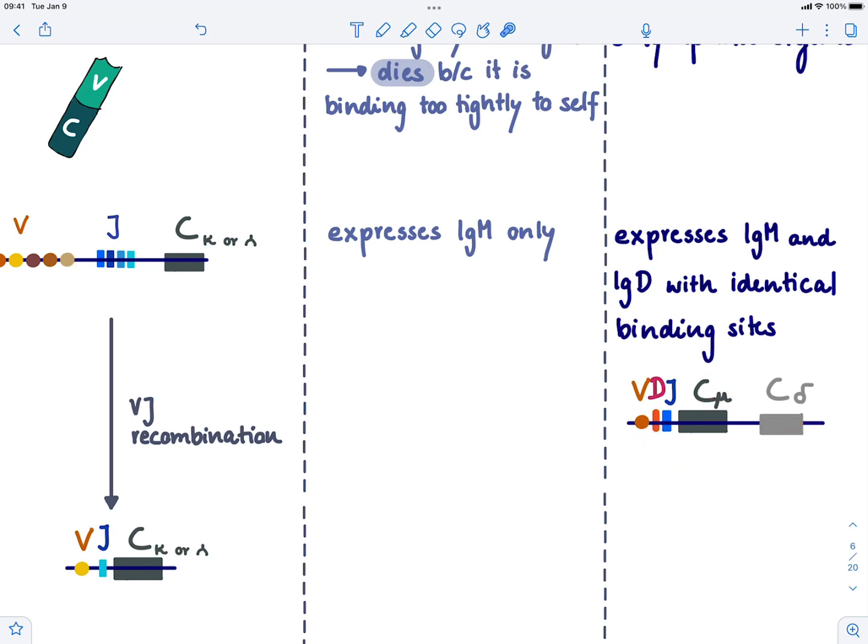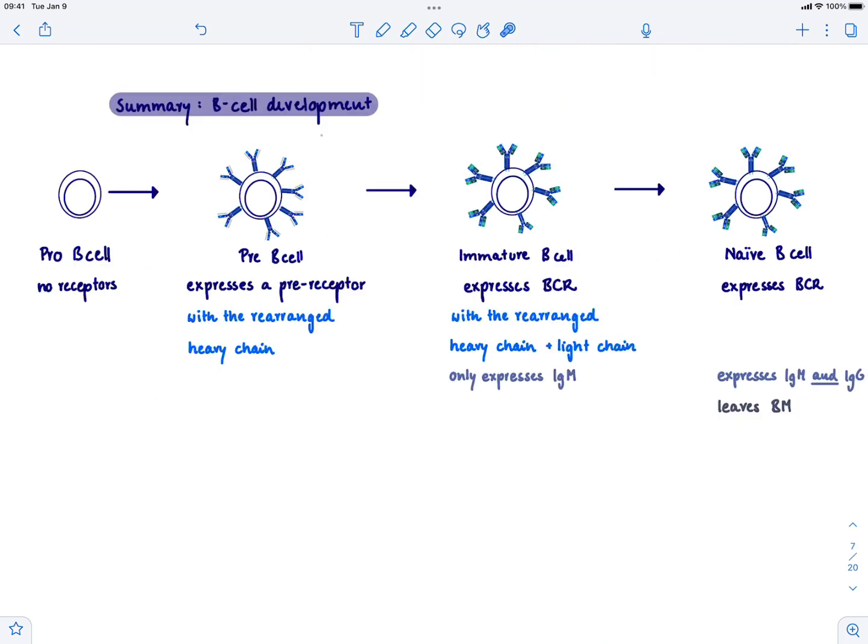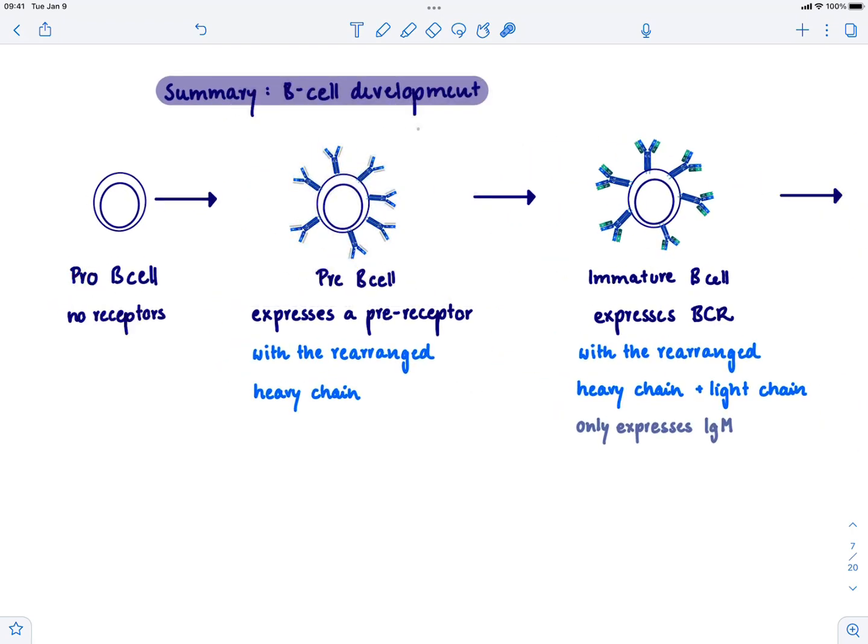To sum things up, here's an overview figure where you can clearly see these different stages and how the B cell develops. It starts as a pro-B cell. I know it's counterintuitive because if you're thinking about 'pro,' you think professional B cell, but it's actually the opposite—it's a B cell that can do the least, doesn't even have a B cell receptor. It doesn't have any receptors, has no idea what's going on.